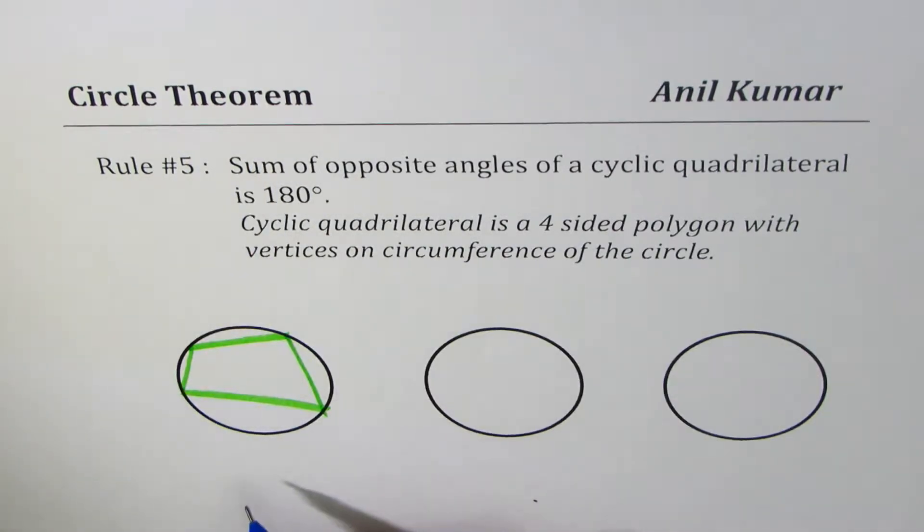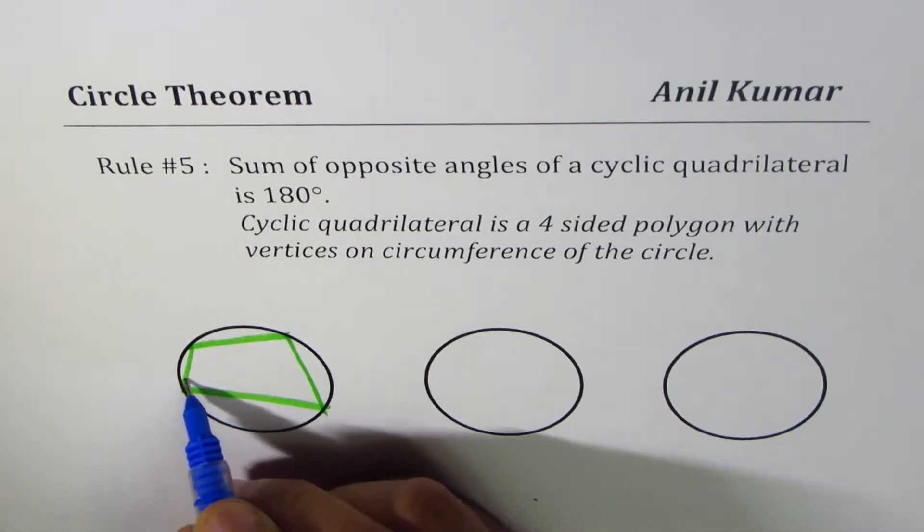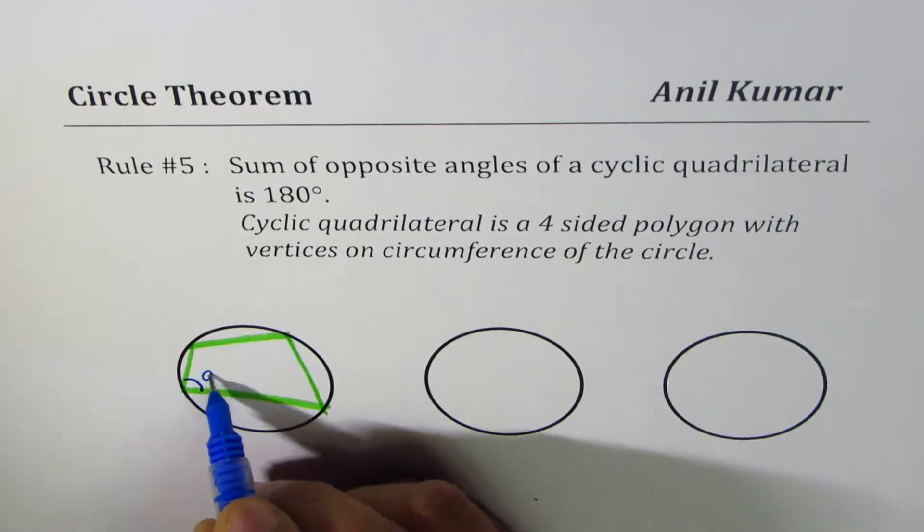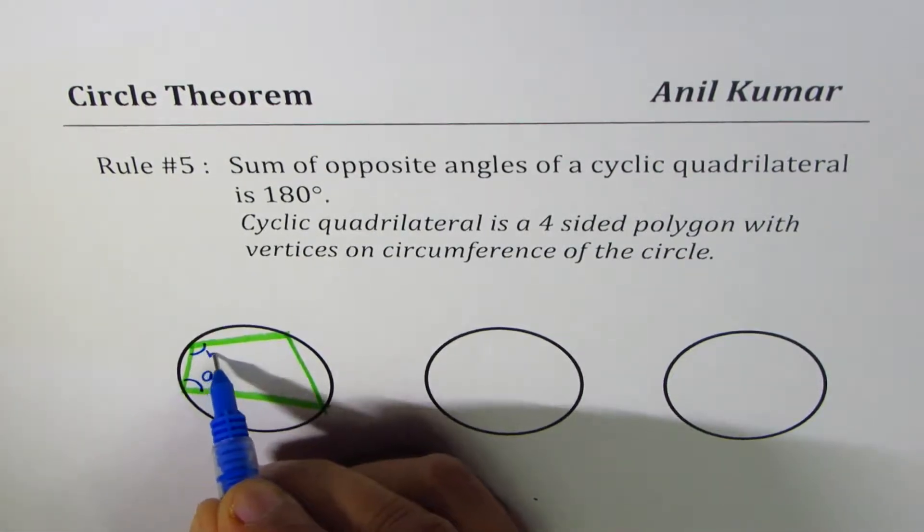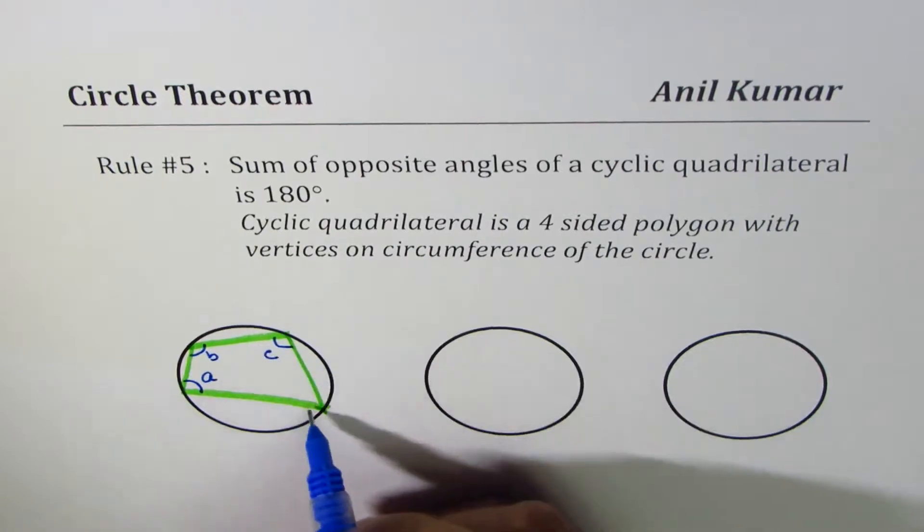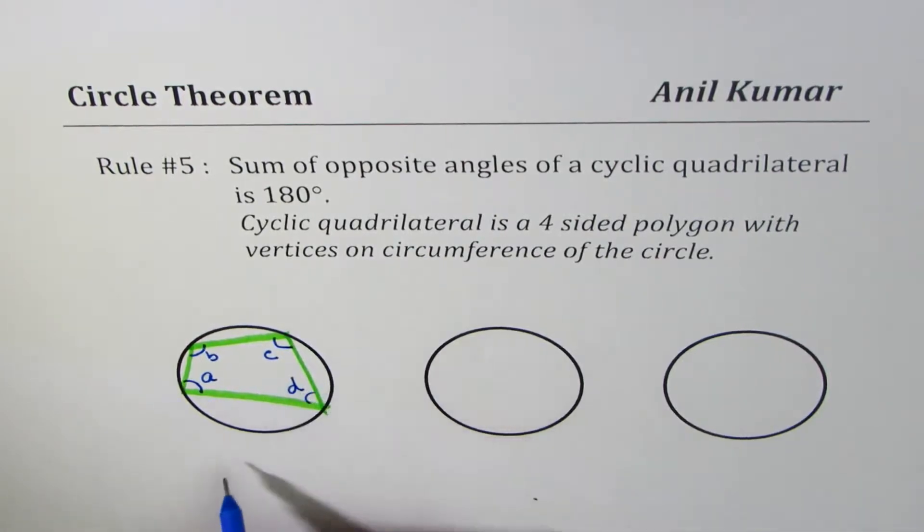Since these four points are on the circle, the circle theorem states that sum of opposite angles—let's say this angle is a, this angle is b, this is c, and this angle is d—then a plus c equals 180 degrees, and b plus d is also equal to 180 degrees. That is what it means.